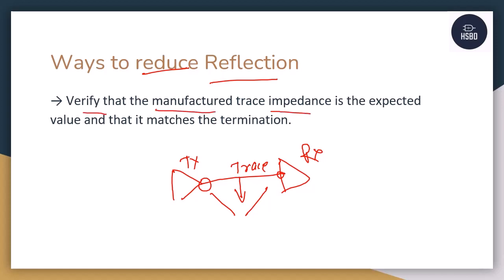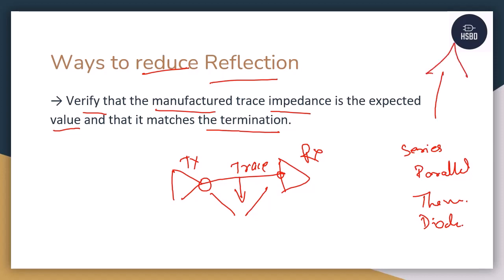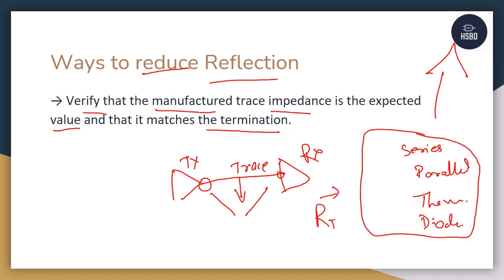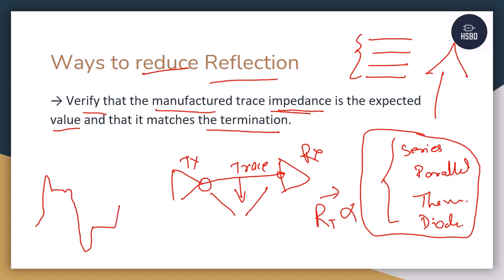One method to reduce reflections is to verify that the manufactured trace impedance is the expected value and that it matches the termination. As I explained in my earlier video covering series termination, parallel termination, Thevenin's termination, and diode termination, the termination resistance RT should be in proportion to the manufactured trace impedance. You need to make sure the termination resistance value correlates with the trace impedance from your manufacturer's layer stackup. If the values do not correlate, you will definitely see overshoots and undershoots while your signal is traveling — and those overshoots and undershoots are a form of reflection.